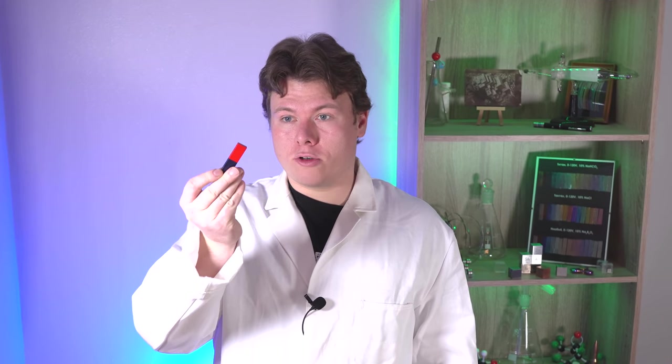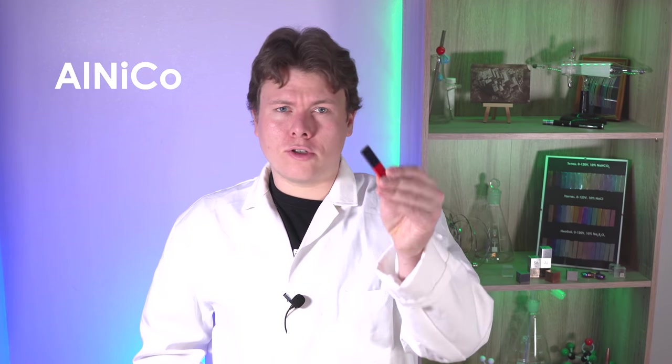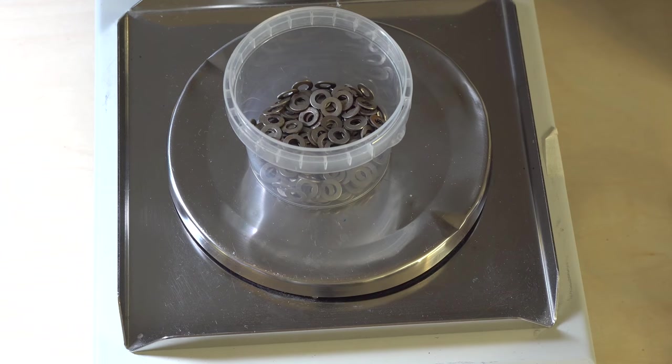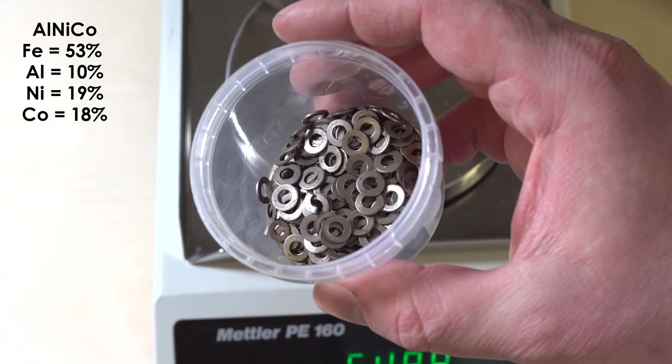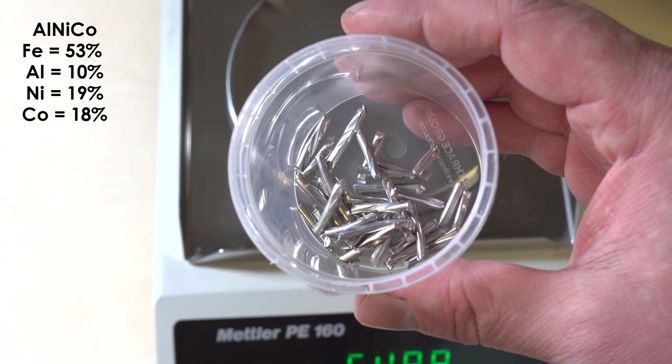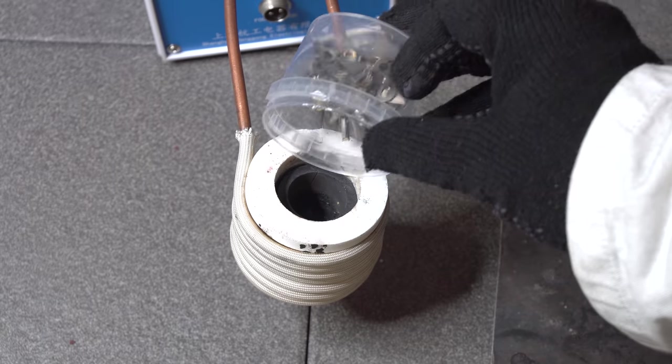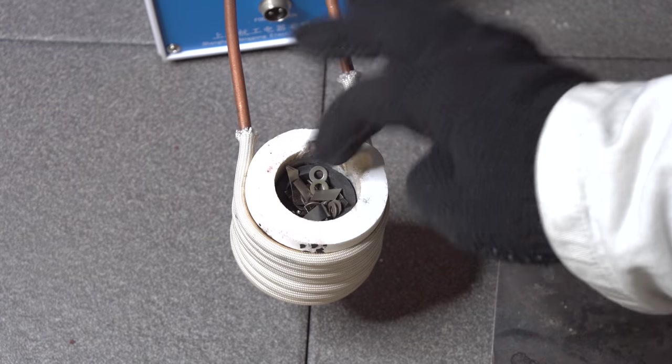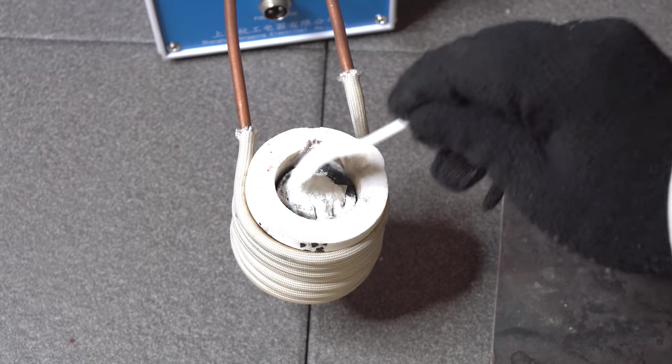The very magnet I am holding in my hand is made of the Alnico alloy. The components of which are easy to figure out. To make this alloy, I have weighed out 30 grams of the metal mixture. 53% of which is iron, 10% is aluminum, 19% is nickel, and 18% is cobalt. After loading the crucible with all the components and adding flux, we can start the heating process.